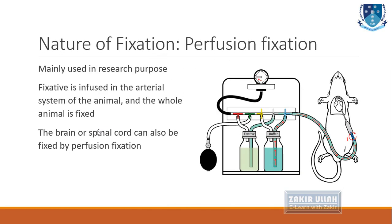Perfusion fixation is usually done in research processes. In this type of fixation, the chemical substance is injected into the arterial system of an animal and circulated throughout the whole body, so the entire organism is fixed. If this is not possible, we can also fix the brain or spinal cord of an organism using perfusion fixation.